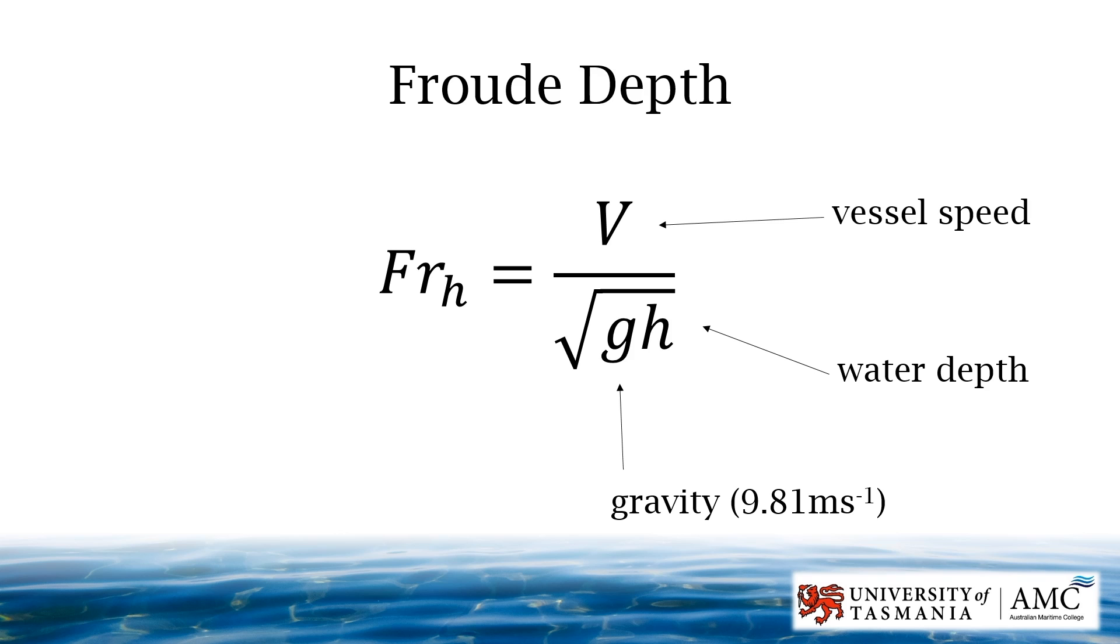Froude depth is a relationship between vessel speed and the depth of the water. If a vessel is traveling at a critical Froude depth of one, it is going the maximum speed of the waves it is generating.